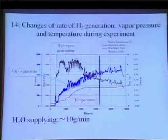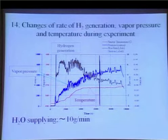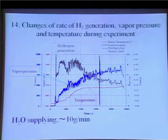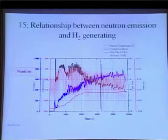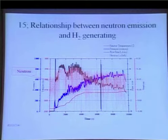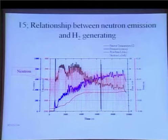This graph shows the typical result of hydrogen generation: you can see the time change of vapor pressure, rate of hydrogen generation, and temperature. The pressure goes up to about 0.6 atm, and then immediately hydrogen gas is released at a rate of about 6 to 8 milliliters per minute. During the experiment the temperature also rises; it takes more than three hours. This graph shows the behavior of neutron generation, indicated by the red dotted line. Neutron generation shows the same change as the rate of hydrogen generation, and hydrogen generation and neutron evolution show very similar coincidence together.